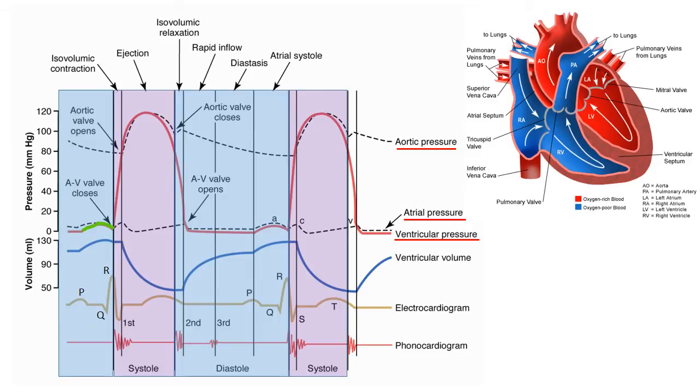As you know, the QRS complex corresponds to ventricular depolarization, which precedes ventricular contraction as shown by the increase in ventricular pressure seen here in the red continuous line. At the peak of the R-wave, the mitral valve closes, which is the first heart sound, because pressure in the ventricles has become greater than the pressure in the atria.